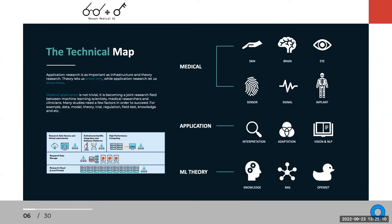On our technical roadmap: at the bottom level we do machine learning theory, knowledge discovery, neural architecture search, self-supervised learning, and open-set/OOD problems. At the middle level we focus on high-level interpretation, trustworthy AI, domain adaptation, and vision-language multimodal learning. On the medical application side we cover skin, brain, eye, and invasive/non-invasive sensors of the human body.